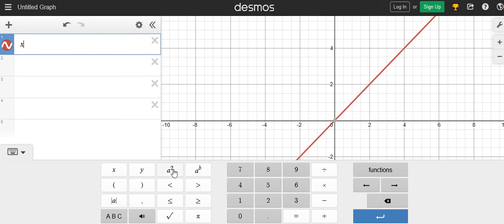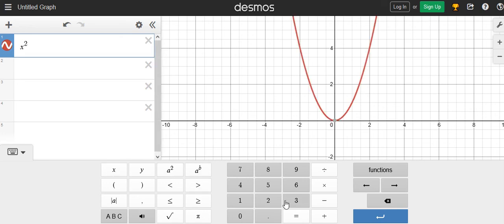I'll write x to the power 2, then plus y to the power 2. This is what I'm using from the keypad, and both of them are equal to 4.